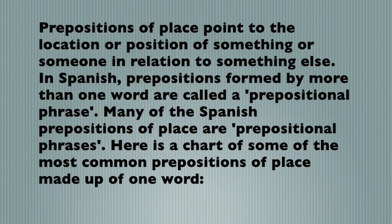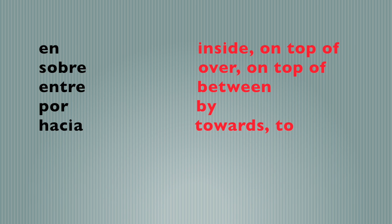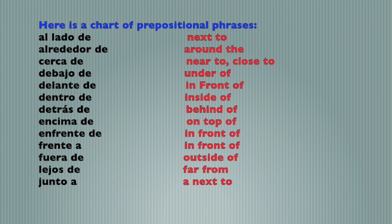So shall we talk about the prepositions of place? Prepositions of place point to the location or position of something or someone in relation to something else. In Spanish, prepositions formed by more than one word are called a prepositional phrase. Here is a chart of some of the most common prepositions of place made up of one word. We have en, which is inside or on top of. Then tenemos sobre, which is over, on top of. Entre, in between. Por, by. Hacia, towards or to.